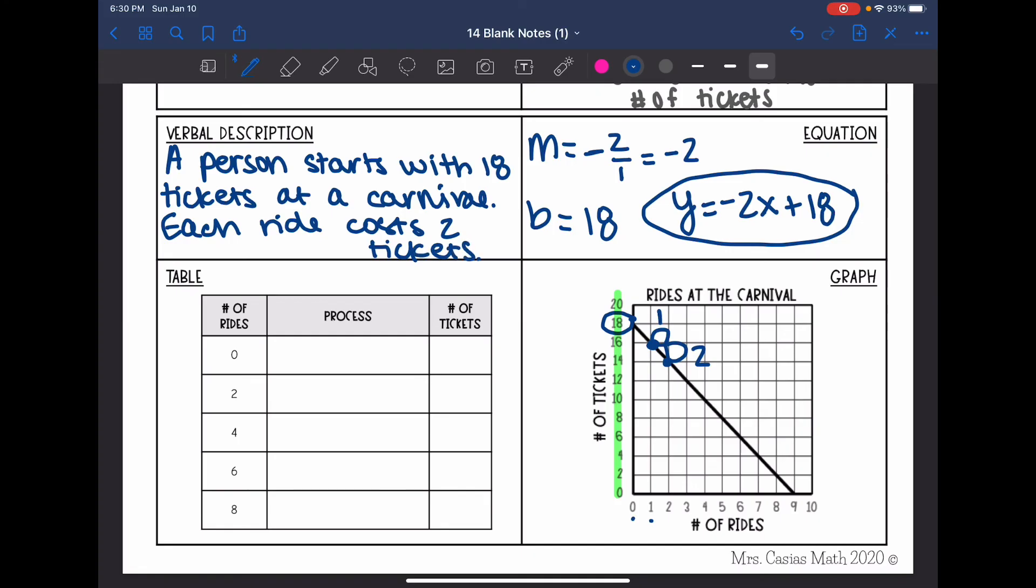All right, the last thing we need to fill out is the table. The process would be to plug into negative 2x plus 18, which if you still want to do that, you can, or you can just get these ordered pairs off of the graph. So when the number of rides was zero, the number of tickets was 18.